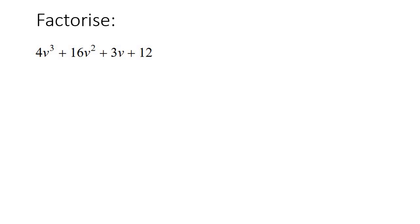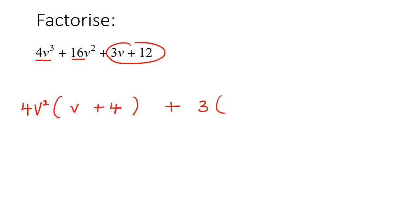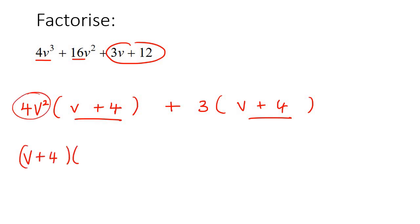Here's our next example. I always like to start by grouping the first two and then grouping the second two. For the first two, there's definitely a common factor of 4, and there's a v³ and a v², so we can take out a 4v². You'd be left with v and 4. Then for the next part, you can take out a common factor of 3, and you'd be left with v plus 4. Since these two brackets are the same, we've chosen correctly. So you take v plus 4 out as a common factor, and you're left with 4v² plus 3. And we are done with that question.